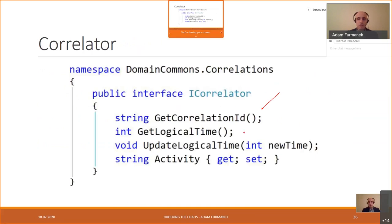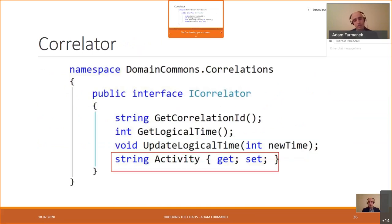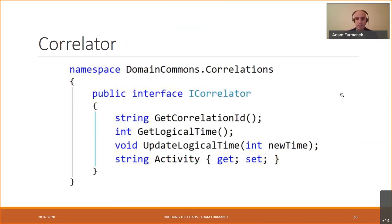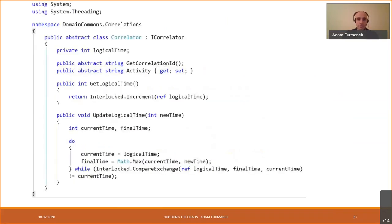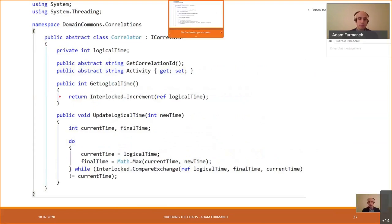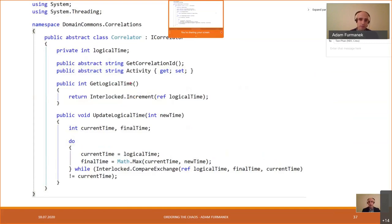We start with an ICorrelator interface providing a correlation ID, a logical time, and an UpdateTime method used when receiving a value from another party. We may also include an activity string — a human-readable name for what's happening. Then we build a base implementation of the correlator reused across all nodes. Importantly, this implementation must be logically equivalent regardless of the language or technology used.